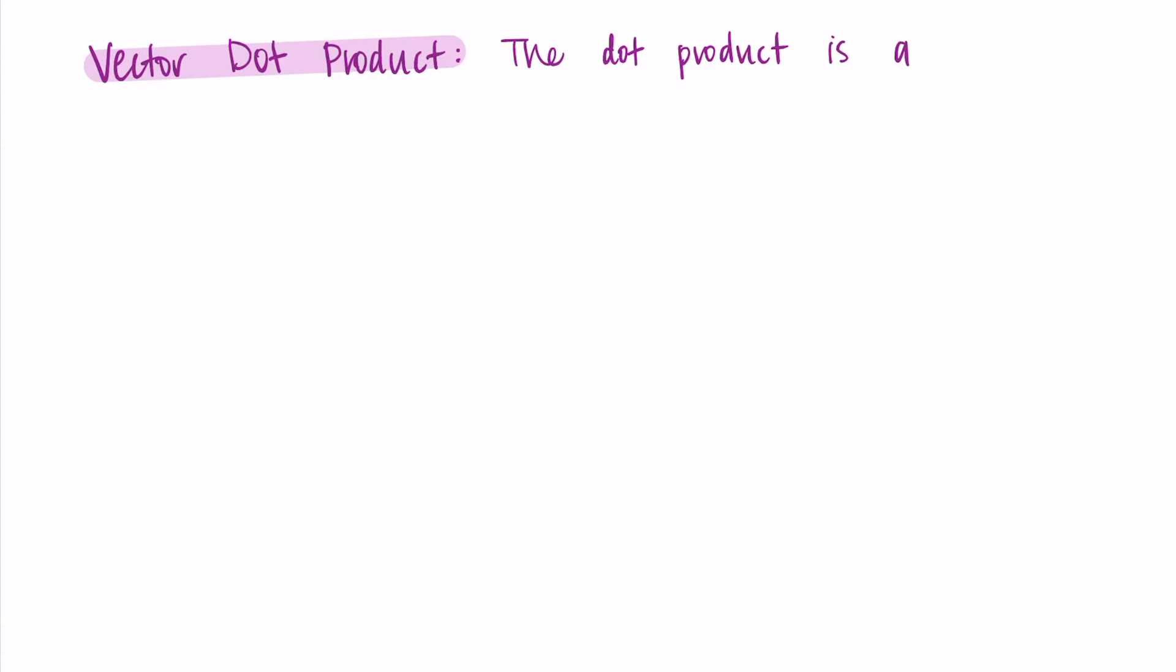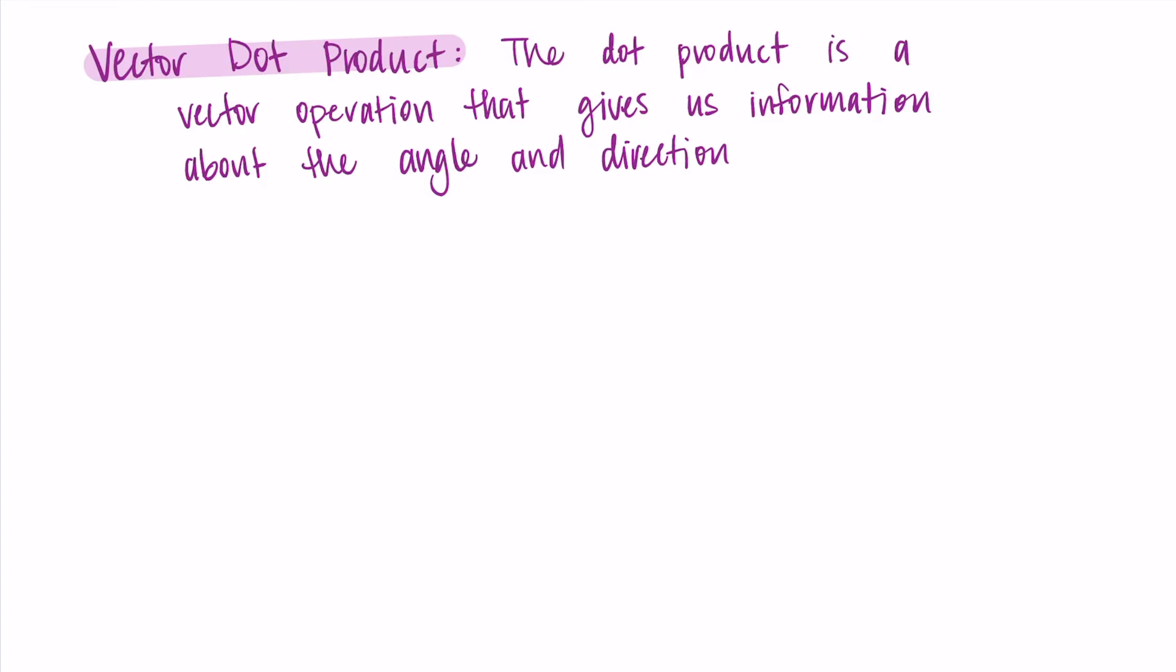So the dot product is a vector operation that gives us information about the angle and direction for a pair of vectors. The dot product works on two vectors, we have two things we use, and we do this operation on them.